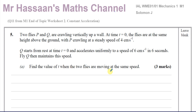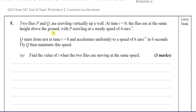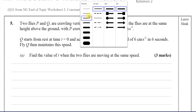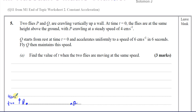Find the value of T when the two flies are moving at the same speed. So you have two flies at the same vertical level at the start, crawling up the wall. You've got fly P and fly Q, starting at time equals 0. P is moving with a constant speed from the beginning — it's moving at 4 cm per second.